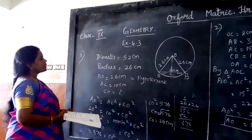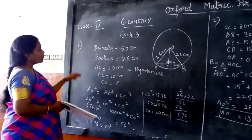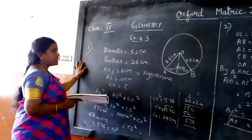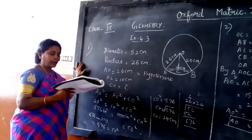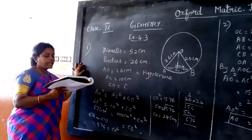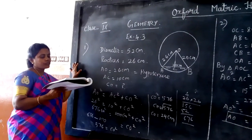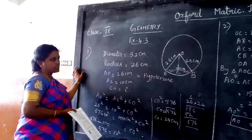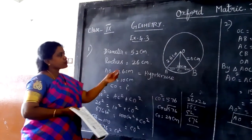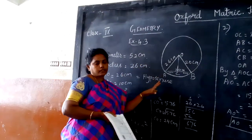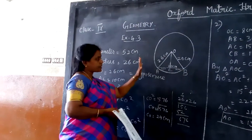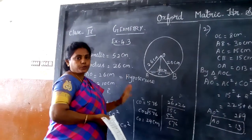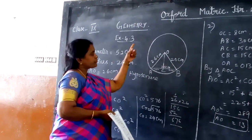Good morning students. Today we are going to do section 4.3, the first question. So let me read the question first: the diameter of the circle is 52 cm. First, you should draw one circle, because based on the figure only we are going to do the sums.